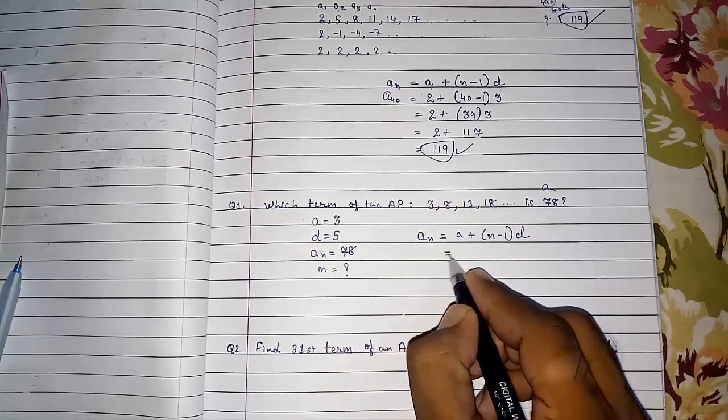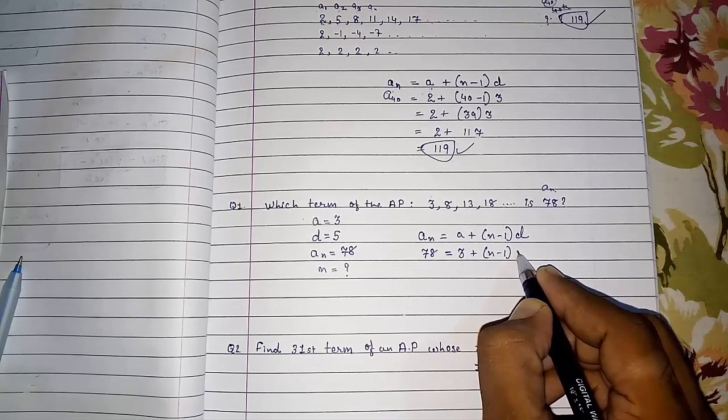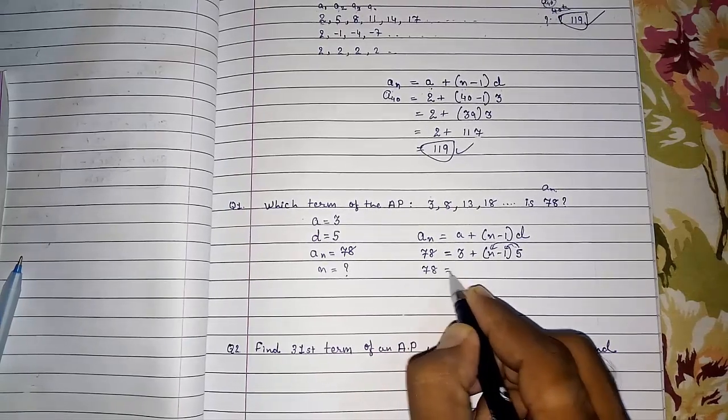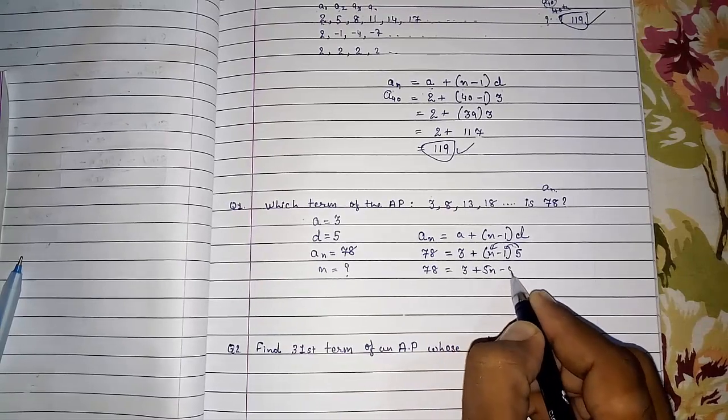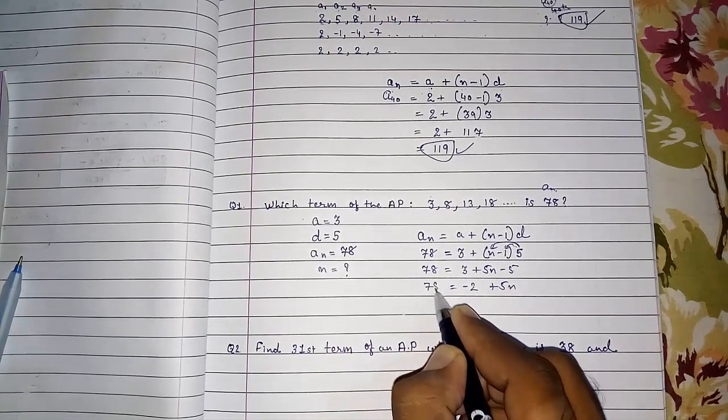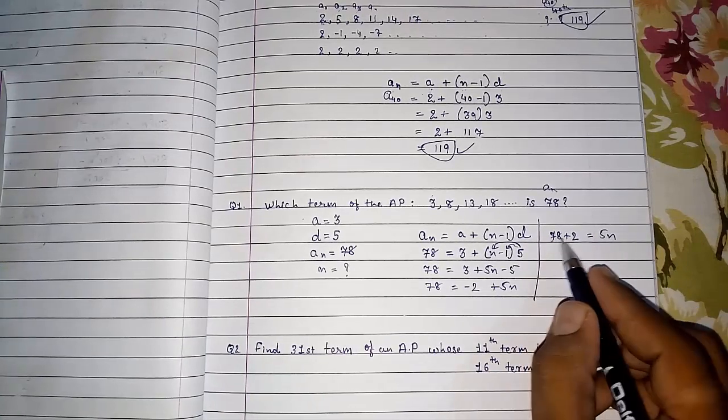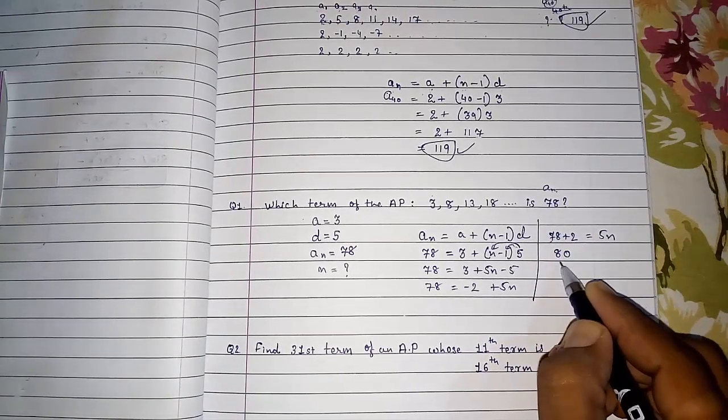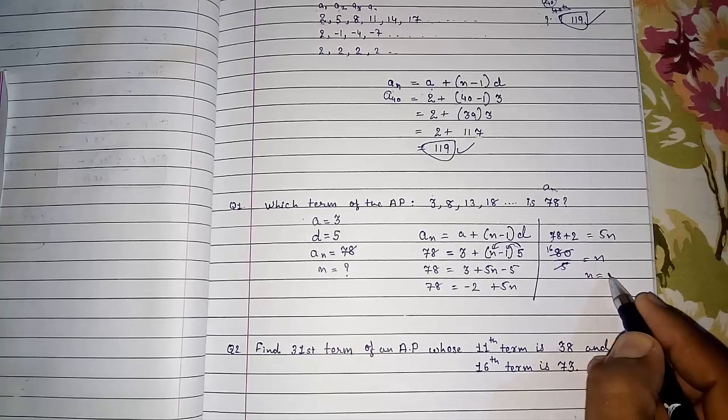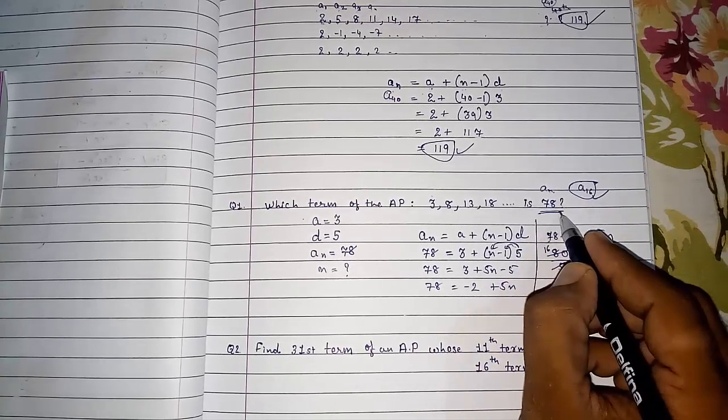AN is equal to A plus N minus 1 into D. This is the basic formula. Here we are having 78. A is 3. Plus N we want to find, and the difference is 5. Now 5 should be multiplied with both this number. Or you can take 78 equals 3 plus 5N minus 5. Now 5N minus, these are the numbers, so it will be minus 2 plus 5N. And this is 78. So take this, here it will become 78 plus 2 equals 5N. So 78 plus 2 will give you 80. 80 by 5, that is N. So N will be 16. So this number is A16. This is the 16th term.